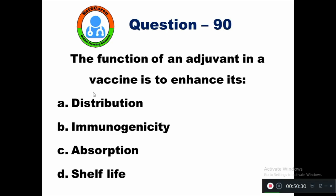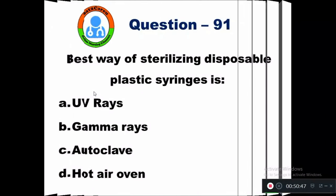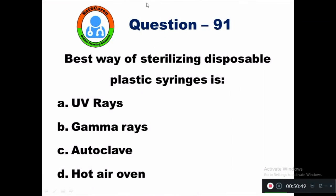Question 90: The function of an adjuvant in a vaccine is to enhance its — option A distribution, B immunogenicity, C absorption, D shelf-life. The function of adjuvant in a vaccine is to enhance its shelf-life.